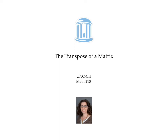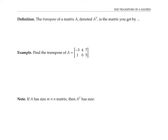This video is about the transpose of a matrix. The transpose of a matrix A, denoted by A with a little T superscript, is a matrix you get by switching the rows and the columns of A. In other words, the first row of A becomes the first column of A transpose.